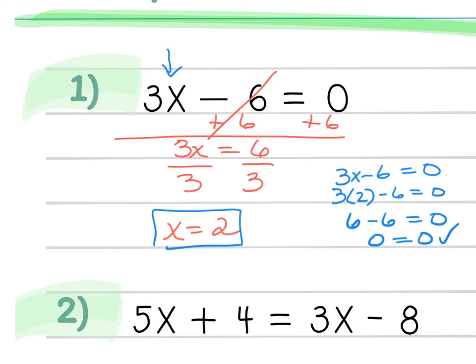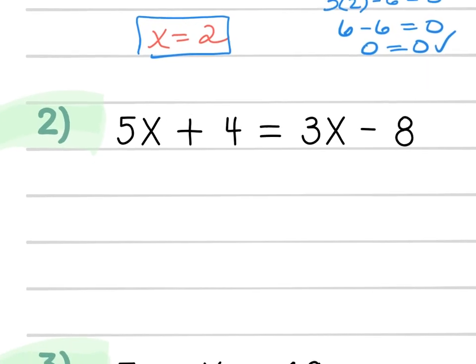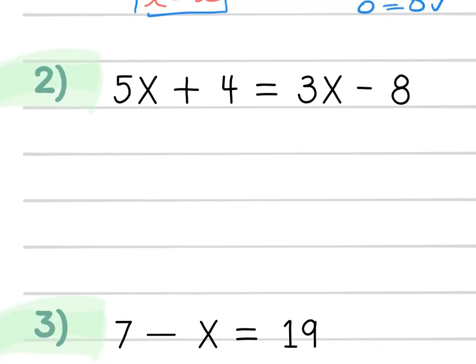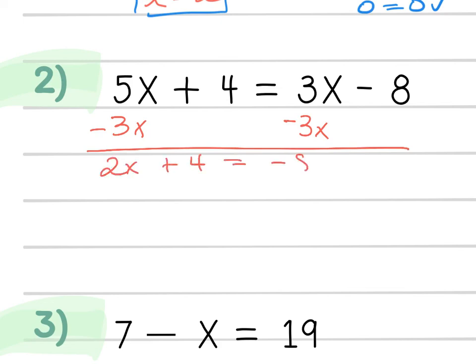Let's try the next one. Our goal is to isolate the variable — get the x's on one side and the constants on the other. It doesn't matter if you move the letters to the left or right. I'm going to move the 3x to the left by subtracting it from the right side, leaving 2x + 4 = -8. When doing this homework, I need to see all the work showing the properties of equality and doing the same thing to both sides. No work, no credit — even if the problem seems simple.